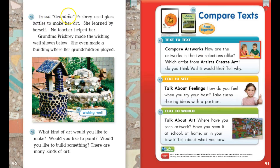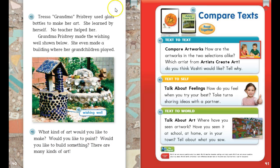Tressa "Grandma" Prisbrey used glass bottles to make her art. She learned by herself — no teacher helped her. Grandma Prisbrey made the wishing well shown below. She even made a building where her grandchildren played. What kind of art would you like to make? Would you like to paint? Would you like to build something? There are many kinds of art, and just a few of them are mentioned here.